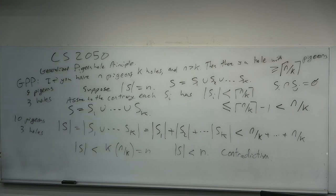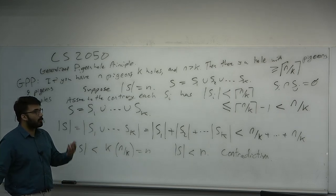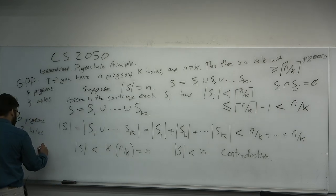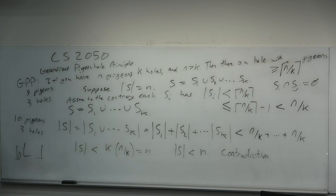The ceiling notation rounds a number up to the nearest integer. For example, the ceiling of 10.7 is 11, and the ceiling of 11 is 11. You may also see the floor notation, which rounds down. These are called the floor and ceiling functions.